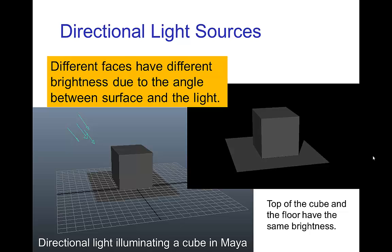you can set up a directional light source. And here's a simple scene with a cube sitting on a floor. And you see that the different faces have a different brightness. So the brightness is uniform across the face,